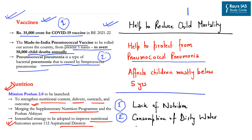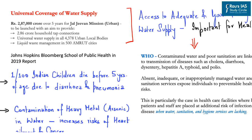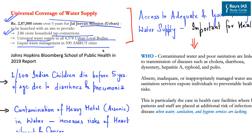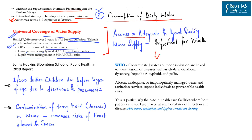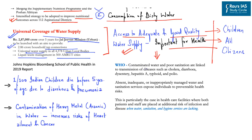On the aspect of clean water, the budget has provided Rs 2,87,000 crores over five years for Jal Jeevan Mission Urban, which aims to provide tap connections to 2.86 crore households, universal water supply in all urban local bodies, and liquid waste management in 500 Amrut cities. According to the WHO, contaminated water and poor sanitation are linked to transmission of diseases such as cholera, diarrhea, dysentery, hepatitis A, typhoid and polio.